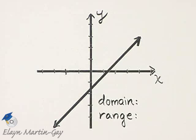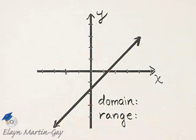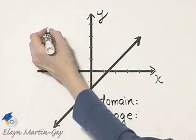Let's decide if this is the graph of a function. Does it pass the vertical line test? The answer is yes, because every vertical line that I could possibly draw only intersects this graph at most once. So yes, this is a function.